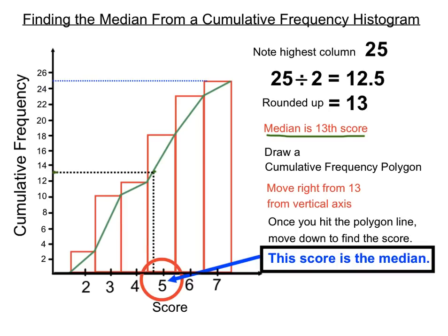So, quite a process, but once we've drawn a cumulative frequency histogram, we draw the green polygon section. Then we go across from the halfway point on our vertical axis, and once we hit the polygon, we can figure out what score we're looking for, for our median.